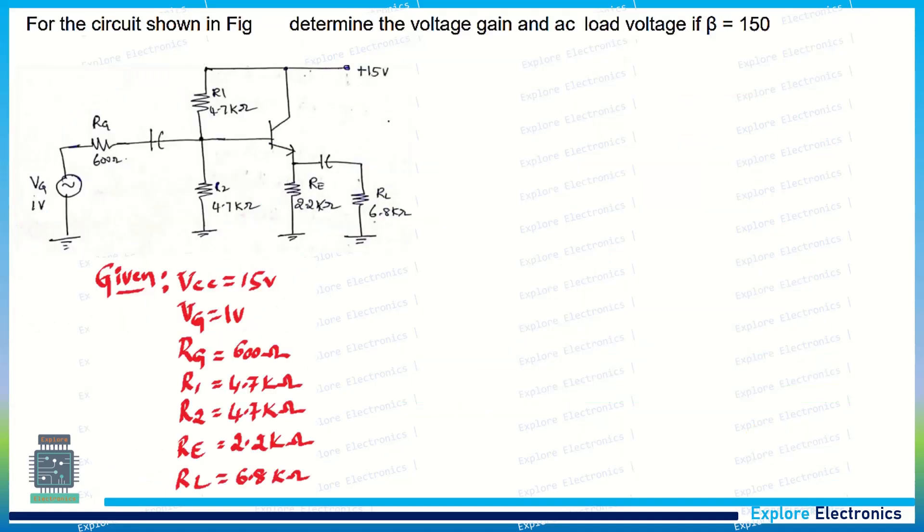In this video, let's understand how to solve the problem on emitter follower to determine the voltage gain and AC load voltage by taking β = 150. This is the question; the figure is given in the question itself.